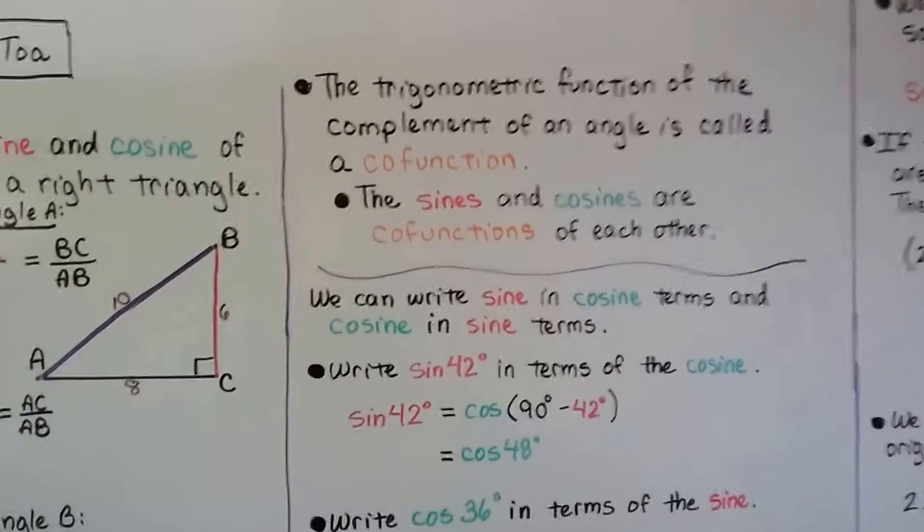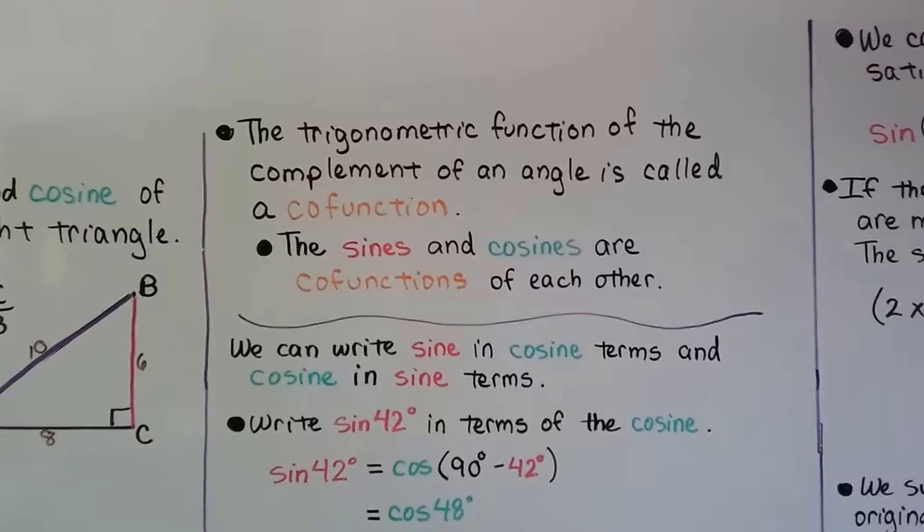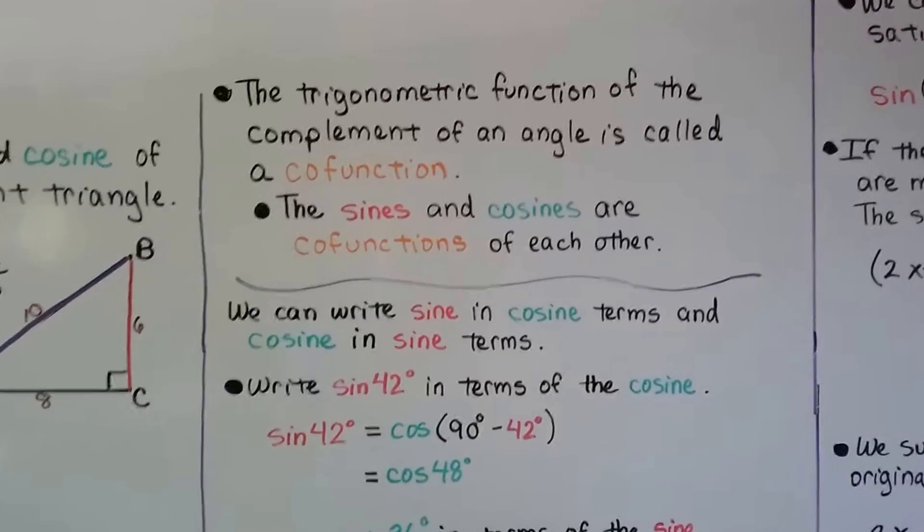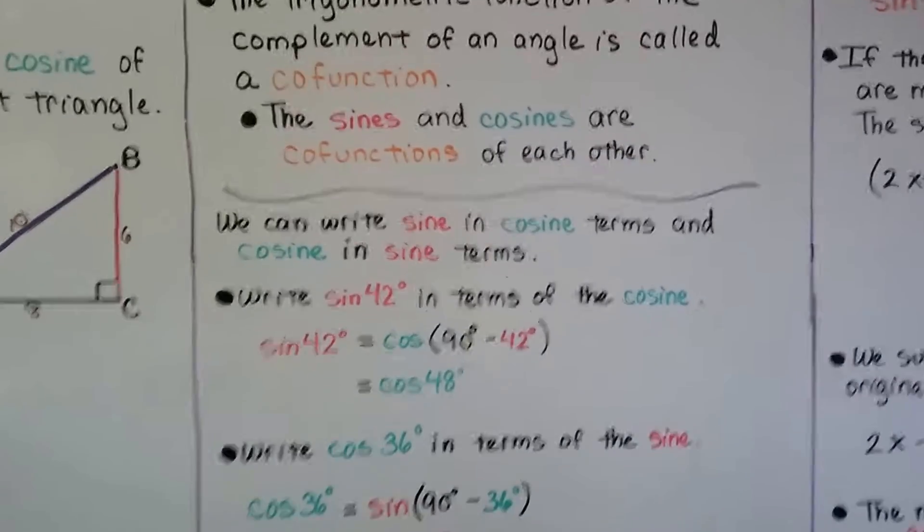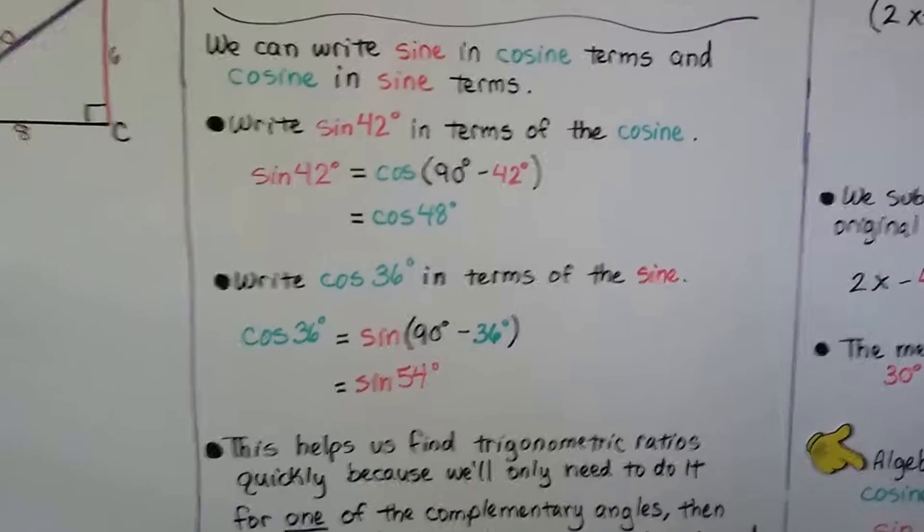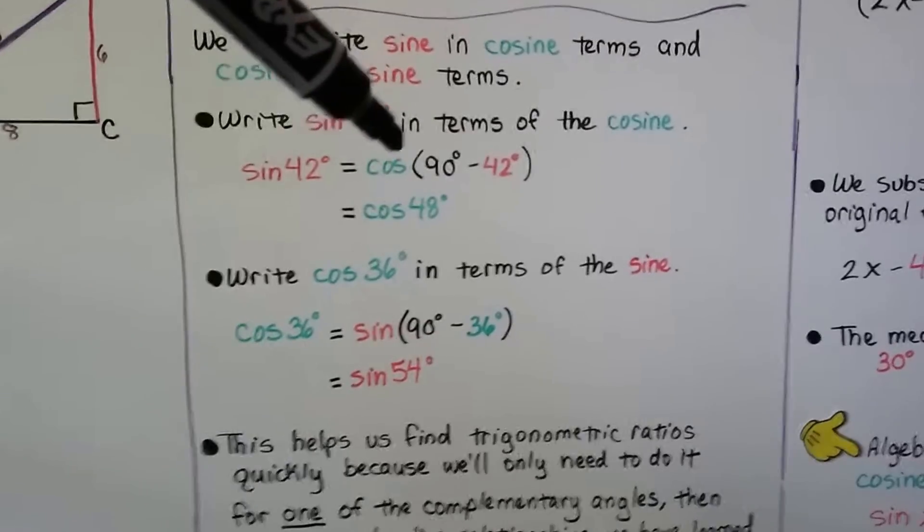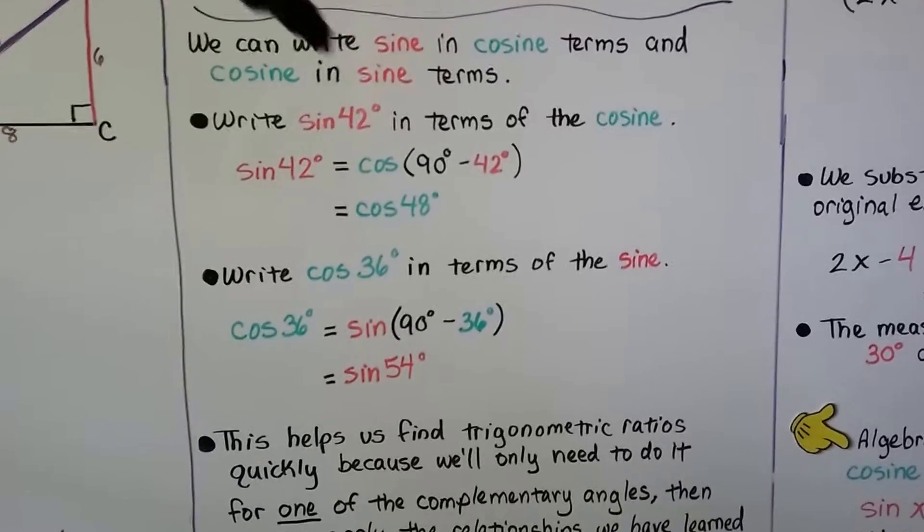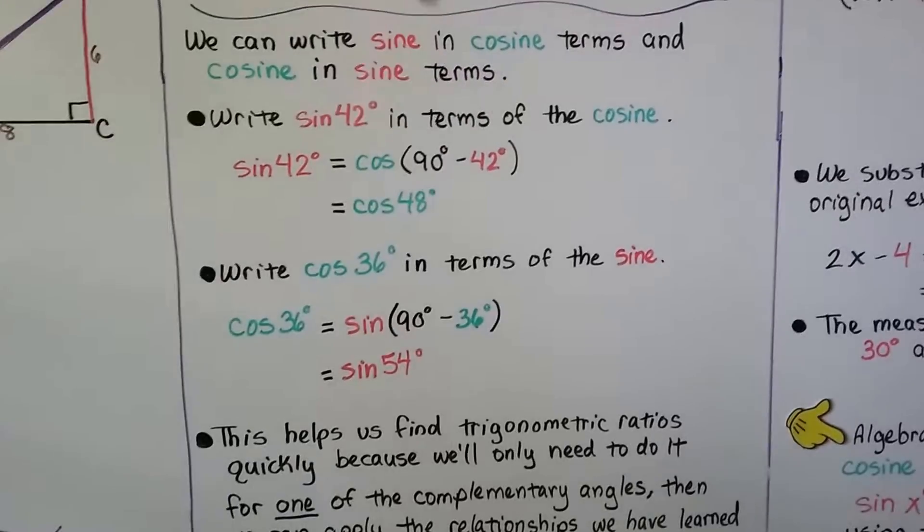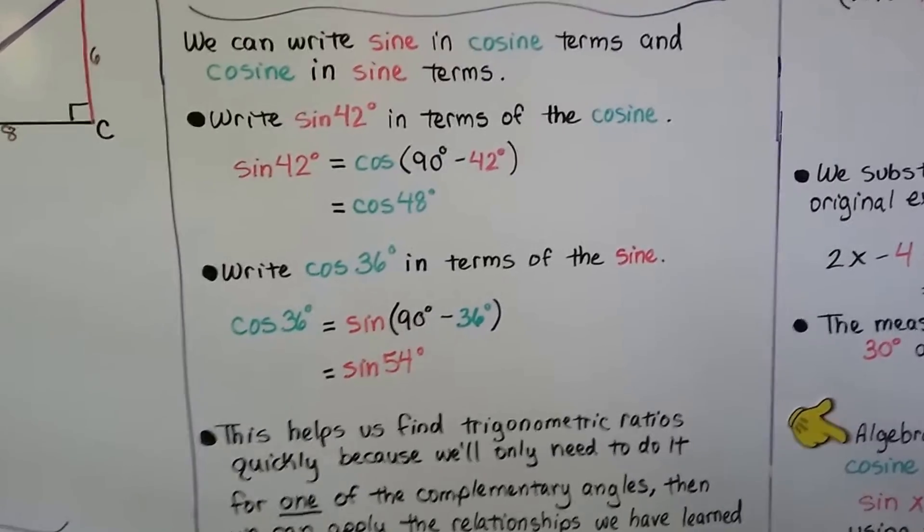And the trigonometric function of a complement of an angle is called a cofunction. And the sines and cosines are cofunctions of each other. We can write sine in cosine terms and cosine in sine terms. For the sine of 42 degrees equals the cosine times 90 degrees minus 42 degrees. Well, 90 minus 42 is 48, so the sine of 42 degrees is equal to the cosine of 48 degrees.